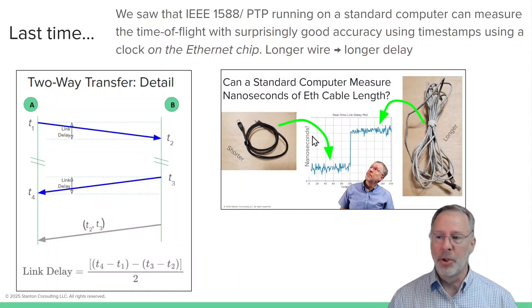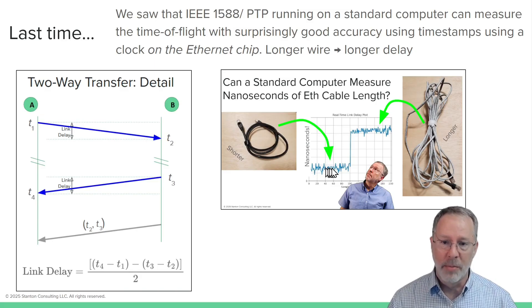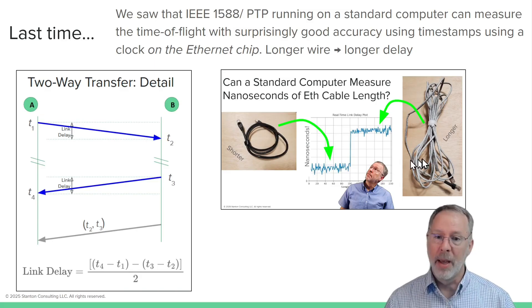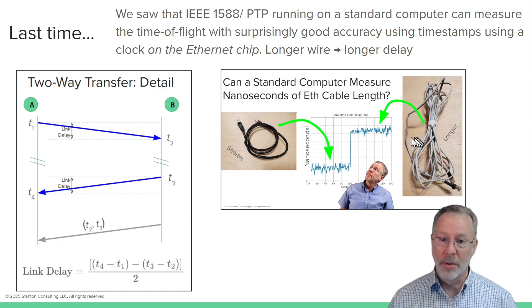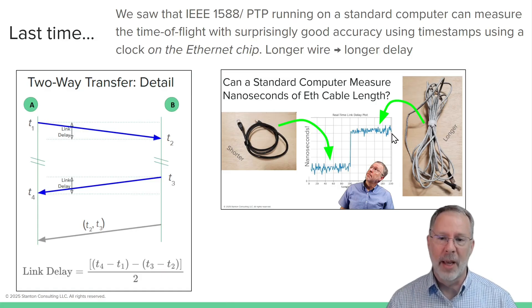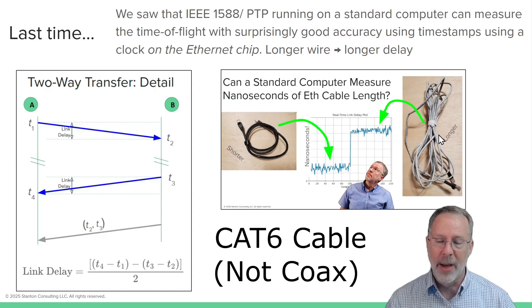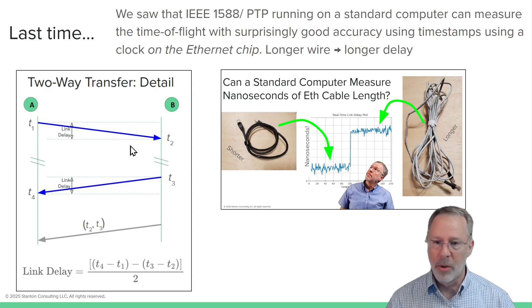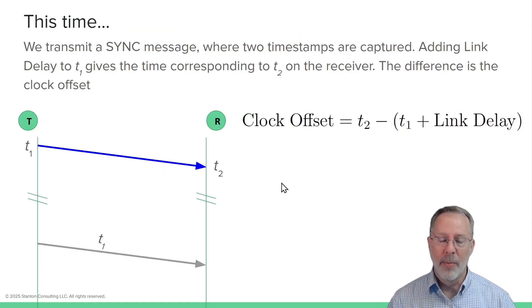Last time, I showed that a short Ethernet cable connecting the computers resulted in a small link delay measurement, and a longer Ethernet cable resulted in a larger offset. And this was pretty impressive. It was down to not very many nanoseconds of variation. And you could actually measure speed of light through the coax cable. And we used this protocol, and I'm not going to go through it in any more detail.